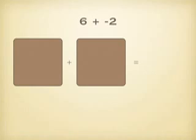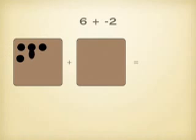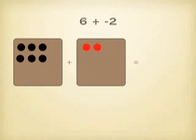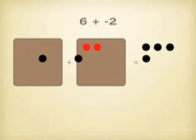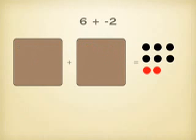So 6 plus negative 2. Let's bring in 6 positives: 1, 2, 3, 4, 5, and 6. And I'm going to add in 2 negatives. When I merge them together, the positives and negatives pair up — this positive and negative cancel, and that positive and negative cancel — so I'm left with 4 positives.